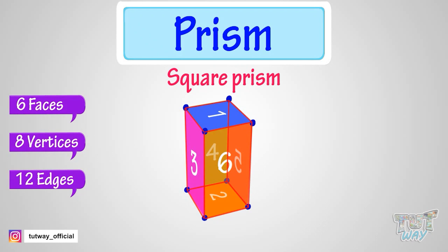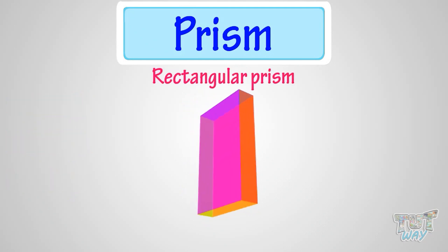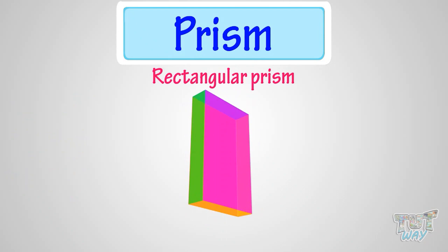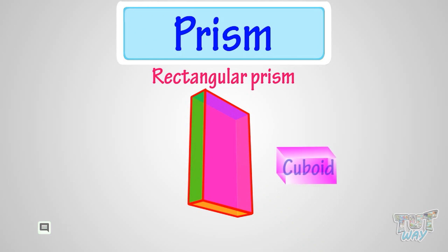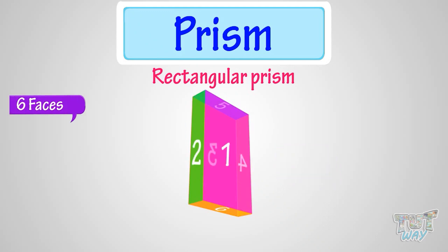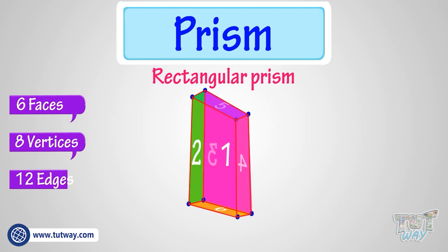Now let's learn another type of prism. This is a rectangular prism, because its top and bottom faces are rectangular and all other faces are rectangular too. This is also the same as a cuboid shape, so it has 6 faces, 8 vertices, and 12 edges.